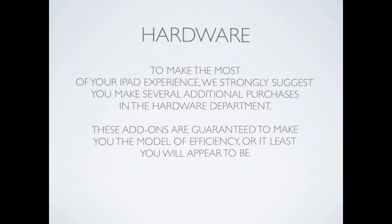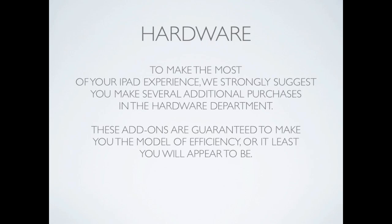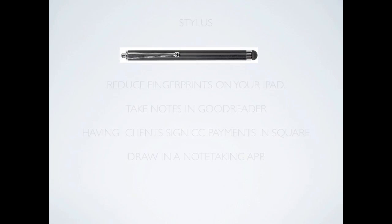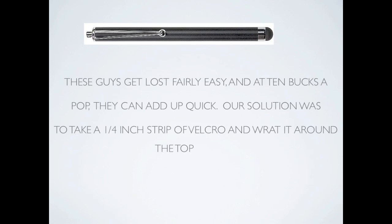That's all the apps we want to talk about. Now we want to talk about some hardware and add-ons that will really help your experience. The first thing we recommend is a stylus. A stylus will reduce fingerprints and help you draw. If you're going to take notes using GoodReader or have people sign for their credit cards, this is the way to go. These things do get lost and at $10 they're not cheap. We put a piece of Velcro on our stylus and it clings to our case beautifully.